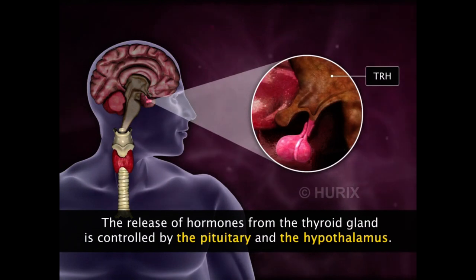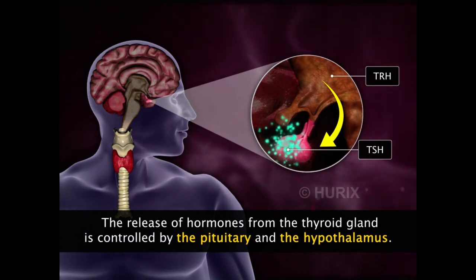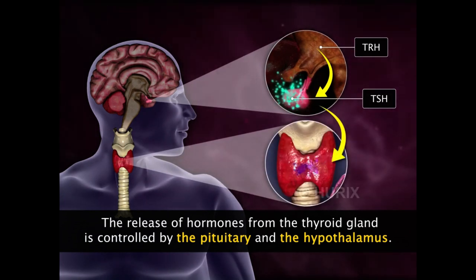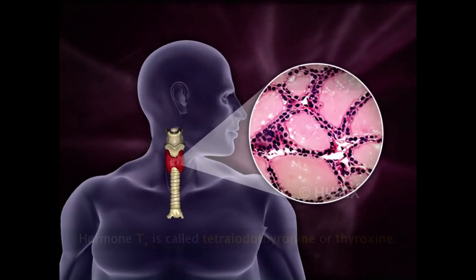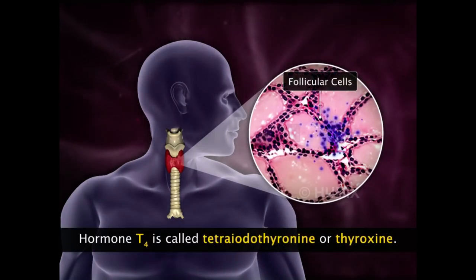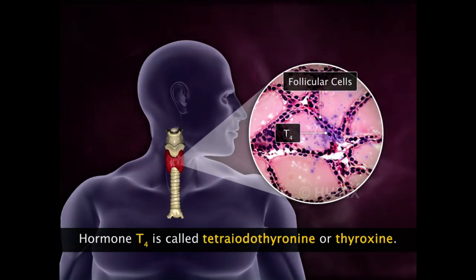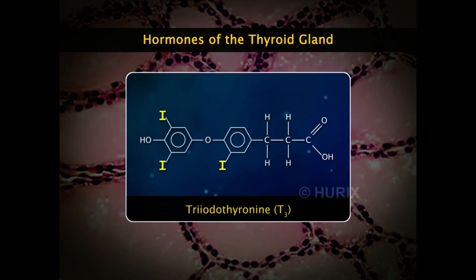The thyroid releasing hormone TRH of the hypothalamus stimulates release of the thyroid stimulating hormone TSH from the pituitary, which in turn stimulates production and secretion of two hormones from the thyroid gland: T3 and T4. The follicular cells of the thyroid gland produce hormone T4, also called tetraiodothyronin or thyroxin, because it has four iodine atoms. Cleavage of one iodine atom from tetraiodothyronin forms a more active form of the hormone, triiodothyronin or T3.